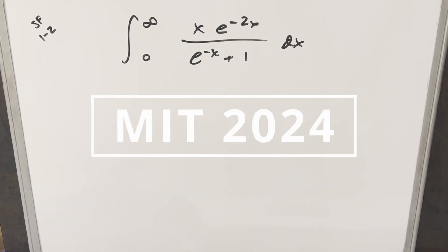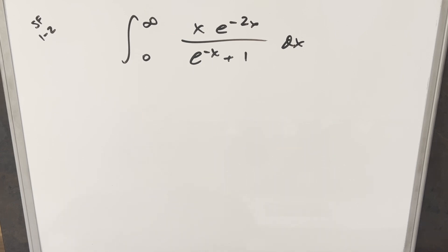We have another interesting integral from the MIT Integration Bee 2024 semifinals round one, problem two. We have the integral from zero to infinity of x·e^(−2x) over e^(−x) + 1 dx.